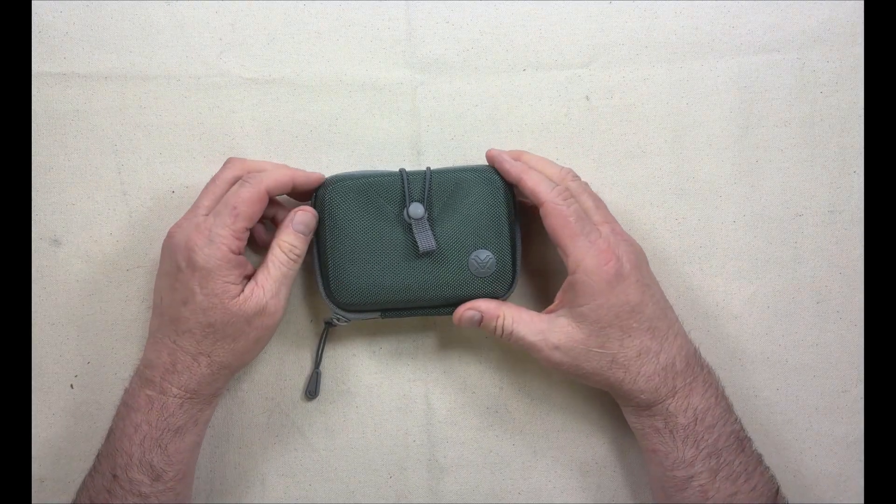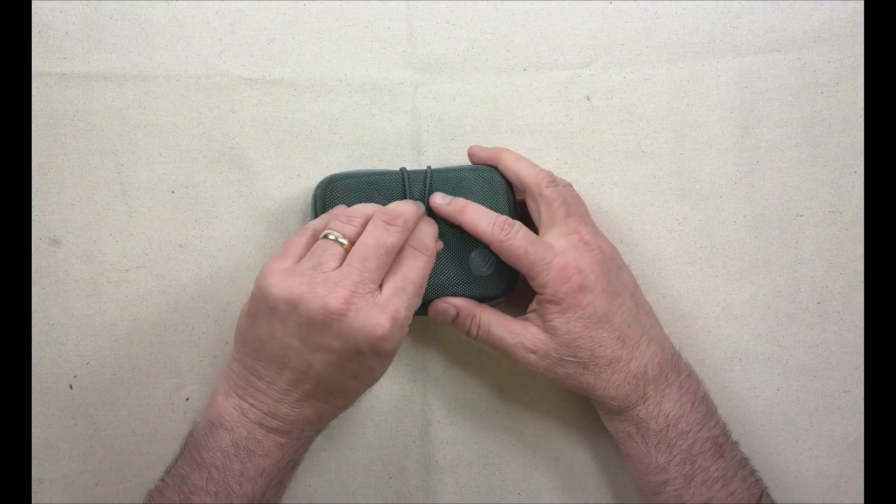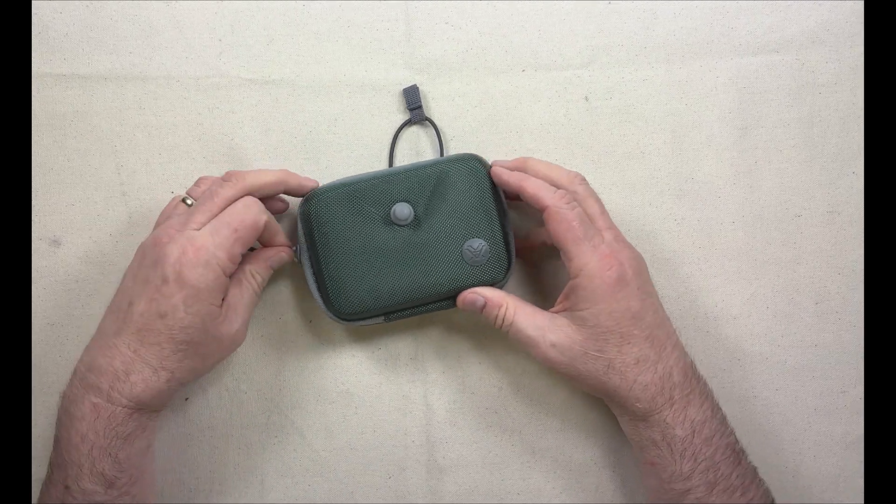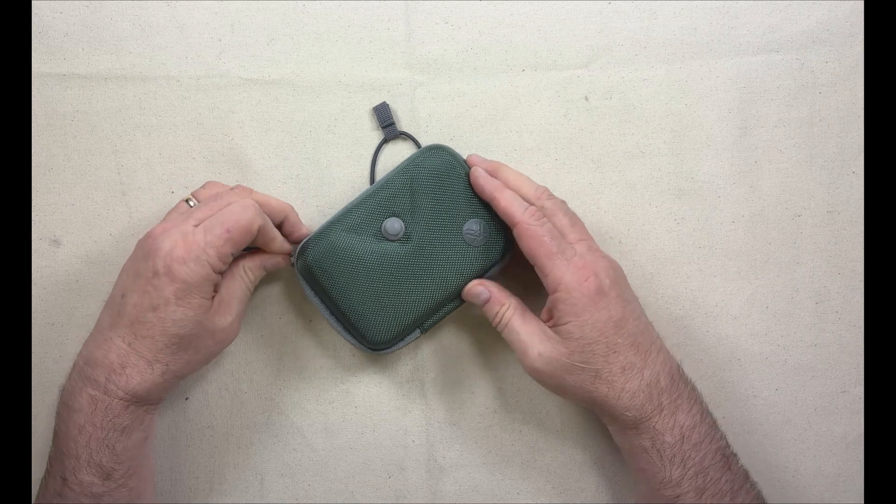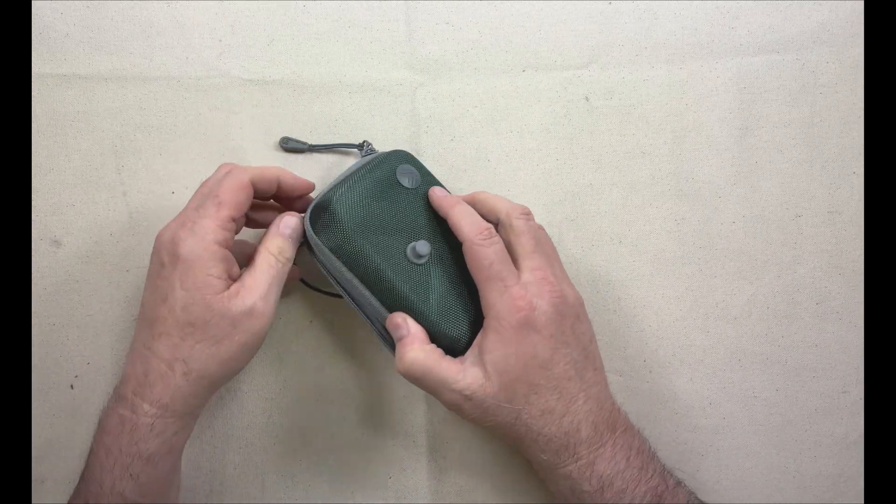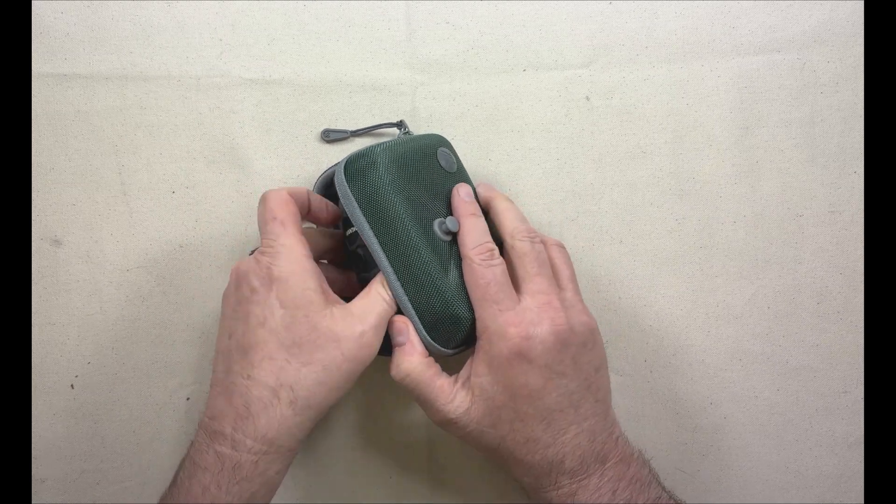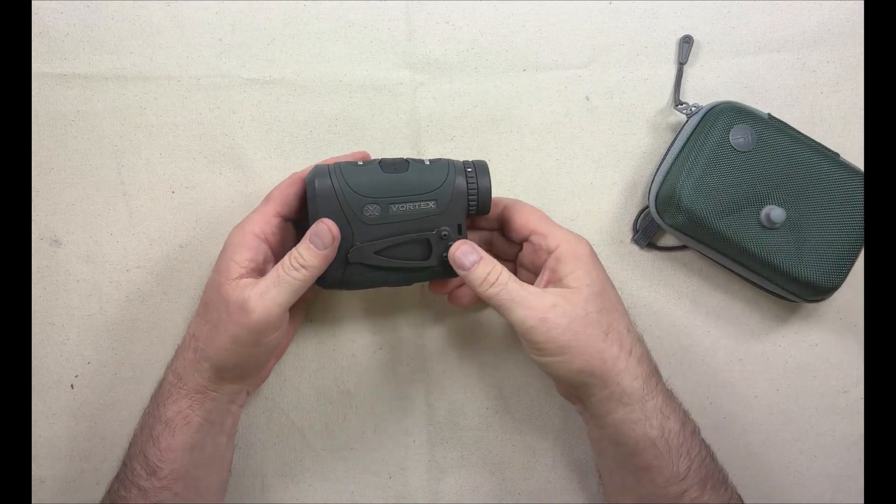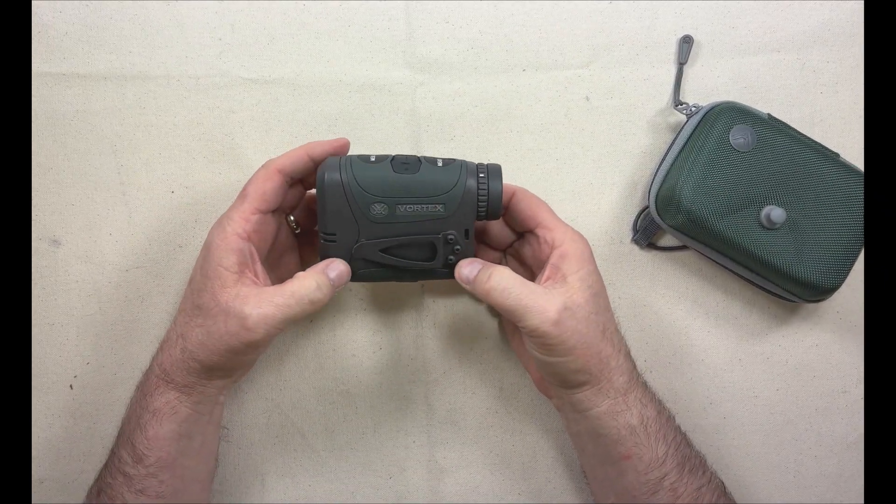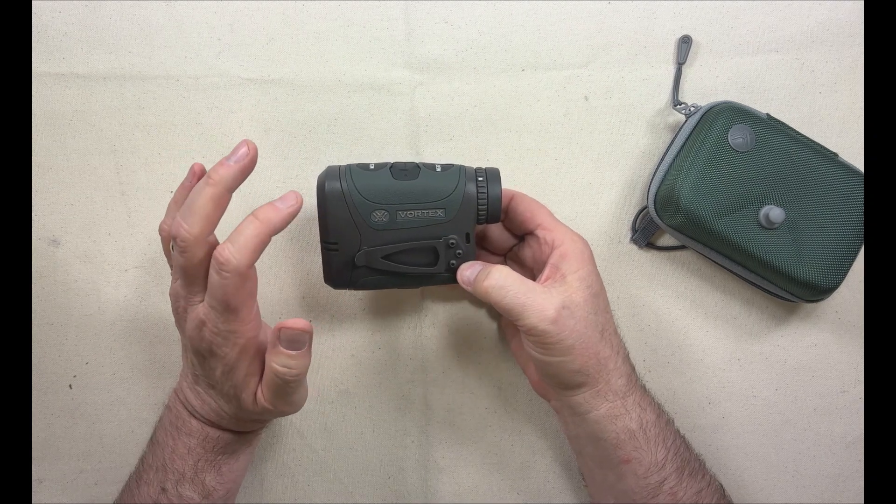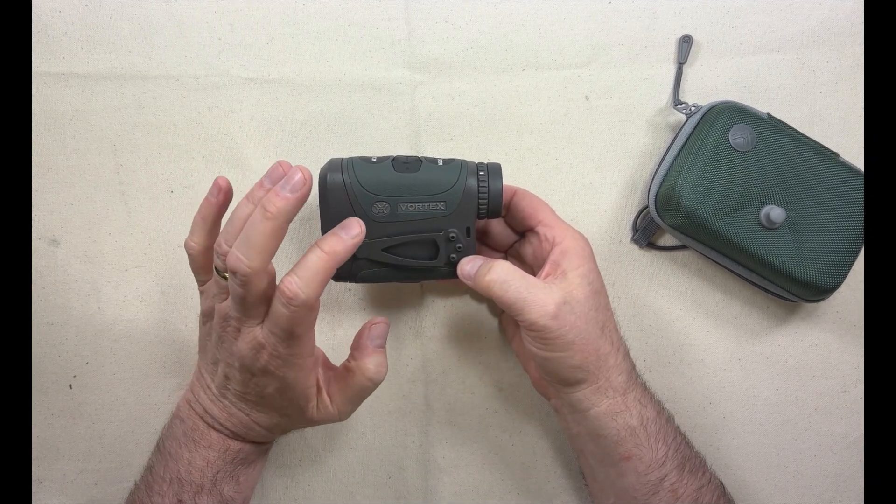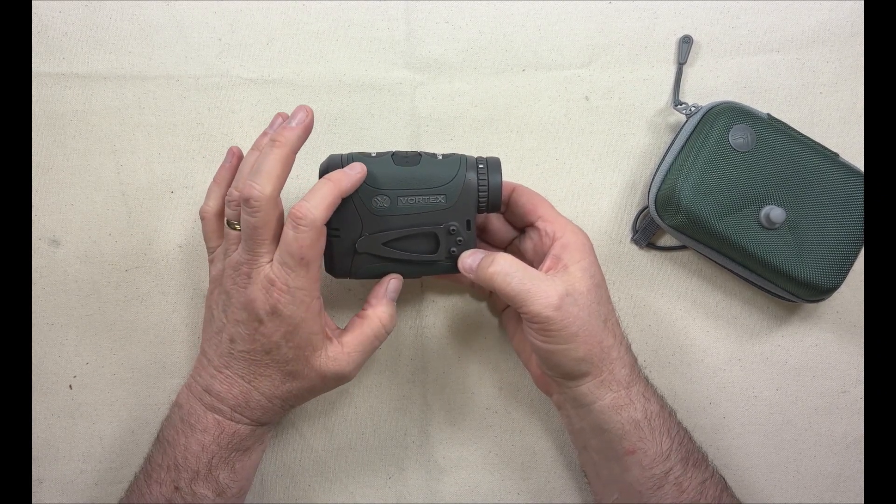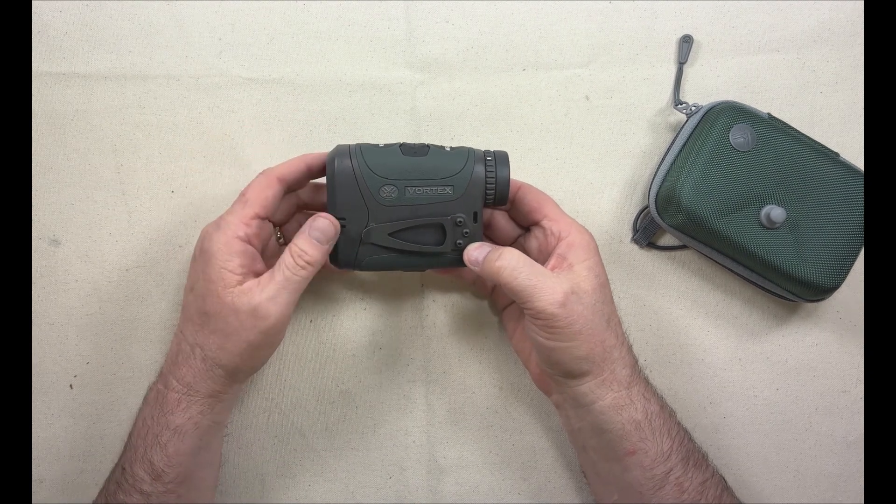So this is going to be a quick review of the Vortex Razor HD 4000 GB rangefinder, and that's kind of a mouthful. This is actually the case that Vortex includes, but what I kind of want to talk about with this, and I'm going to do my best not to make this long because there's actually a lot of information about this particular model that I could talk about, but I don't want to make this video ridiculously long.